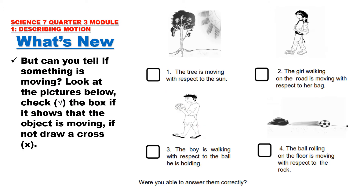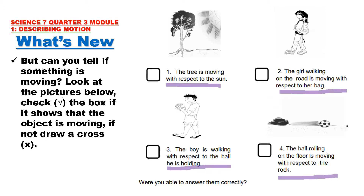Can you tell if something is moving? Look at the pictures below. Check the box if it shows that the object is moving; if not, draw a cross. Number one: the tree is moving with respect to the sun. Two: the girl walking on the road is moving with respect to her bag. Three: the boy is walking with respect to the ball he is holding. And four: the ball rolling on the floor is moving with respect to the rock. Were you able to answer them correctly?